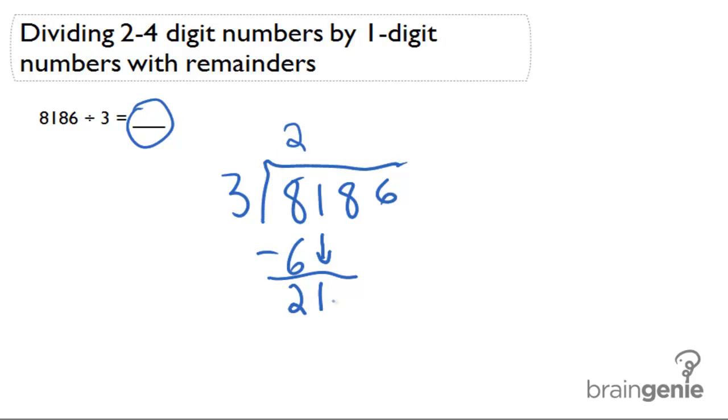3 goes into 21 seven times. 7 times 3 is 21. We subtract 21 from 21 and get 0. We still have numbers, so we bring them down, and we have 8 again.